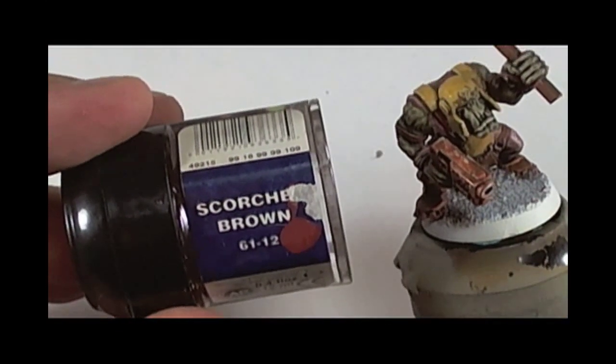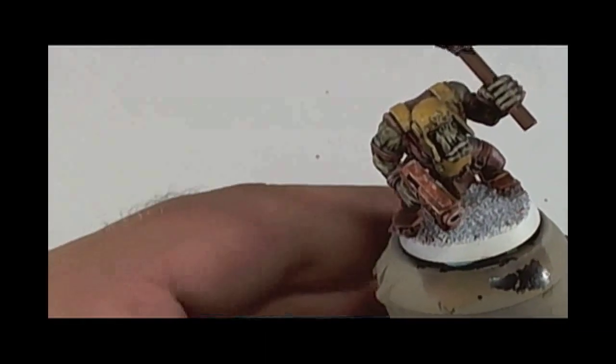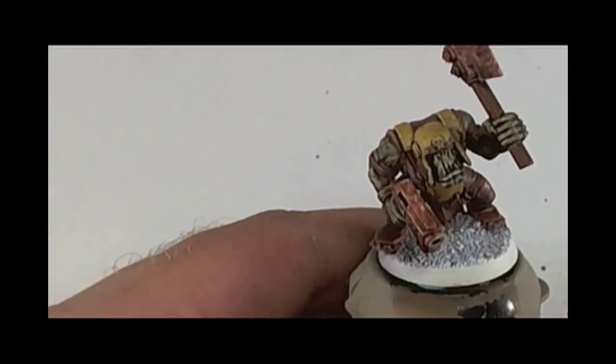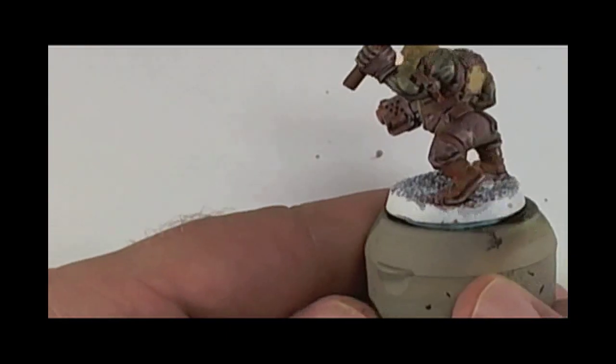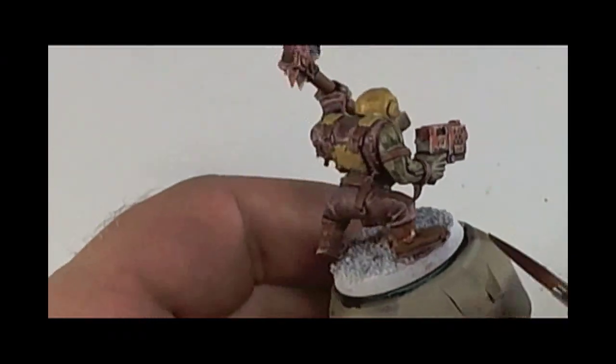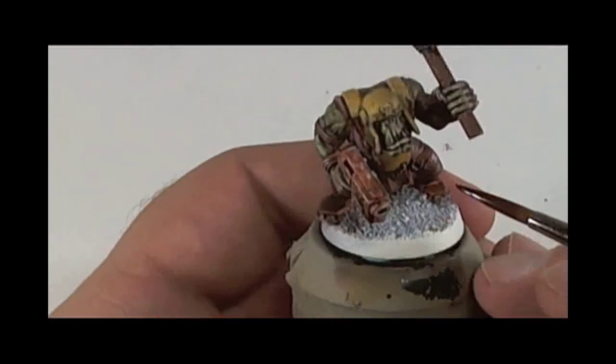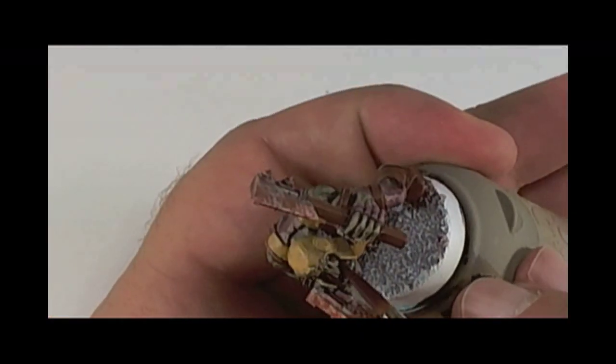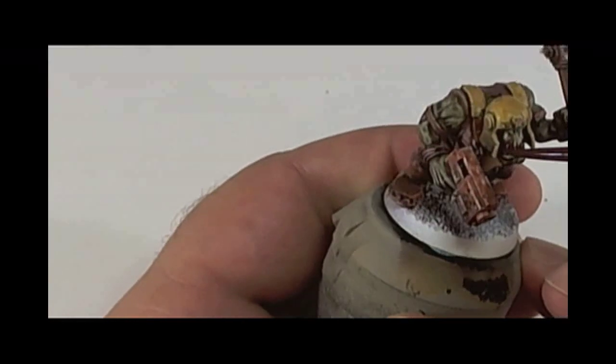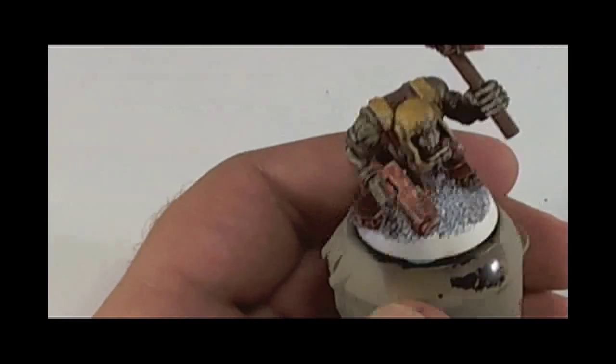Once this is done, we're going to use scorched brown and paint any trophies like bone trophies—in this case the little teeth hanging off his wrist. We'll be painting the teeth and his nails.